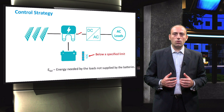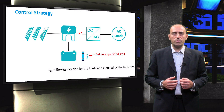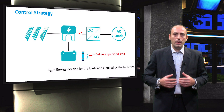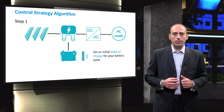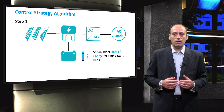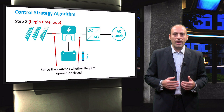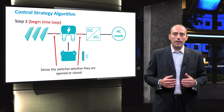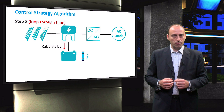The algorithm is overall implemented by looping it through a full year time period. Note that every loop corresponds to the time step that you choose during the beginning of your design. Now, let us look at the various steps followed by the algorithm. The first step is to set a starting state of charge value of the battery bank. Then, in the second step, begin the time loop and sense whether the switches are opened or closed. In the third step, calculate the battery bank current, IBB, for that instance in time. Follow the procedure discussed earlier to determine the battery bank current.